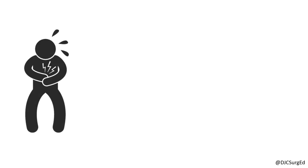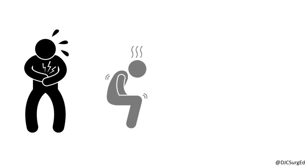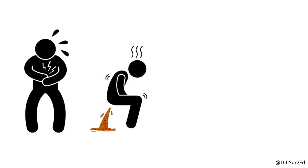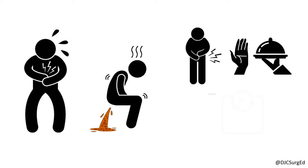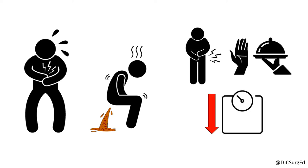The classic presentation is pain out of proportion to exam findings and can occasionally be accompanied by sudden bowel evacuation. If a history of abdominal angina, food intolerance, and weight loss are present, this would suggest an acute on chronic presentation.